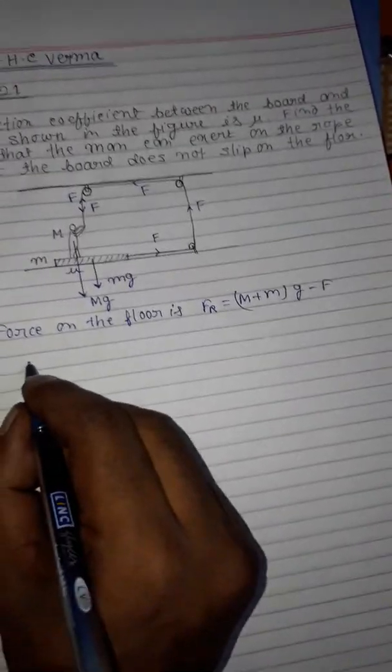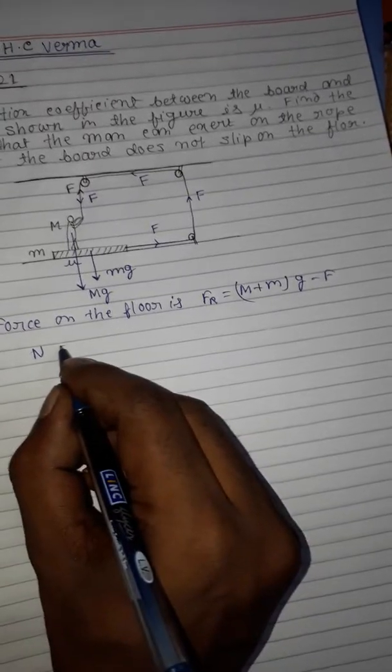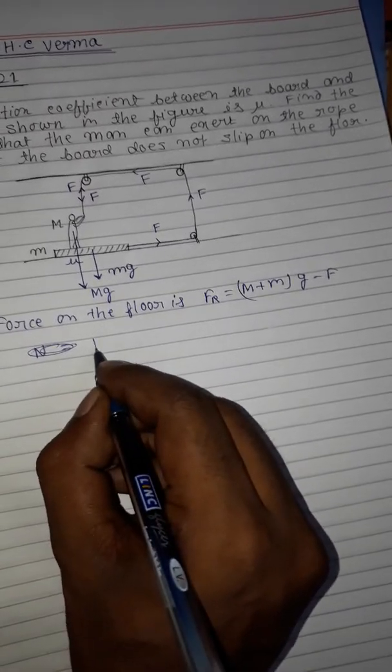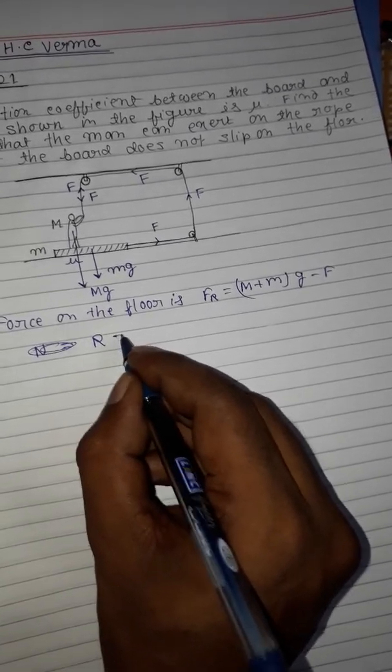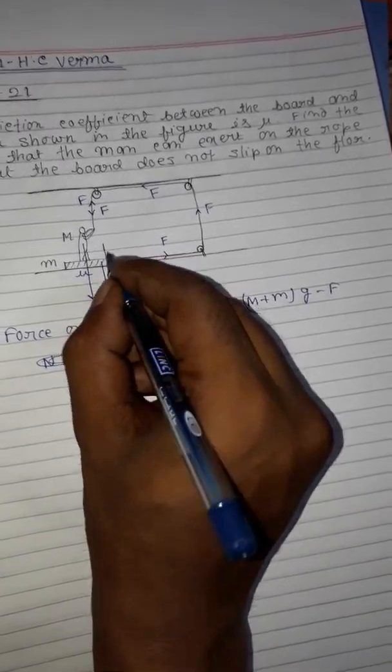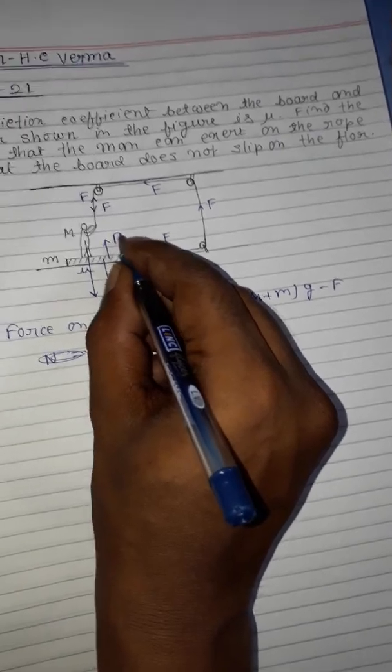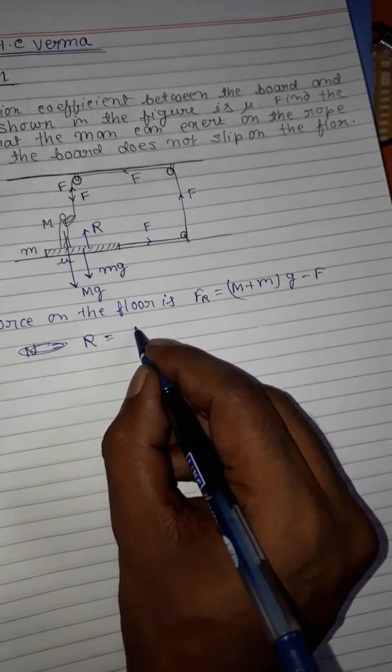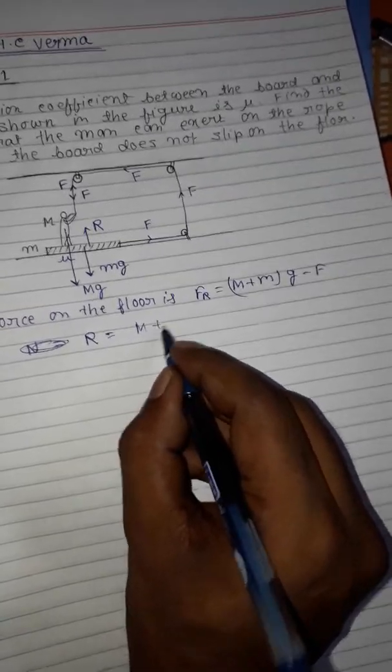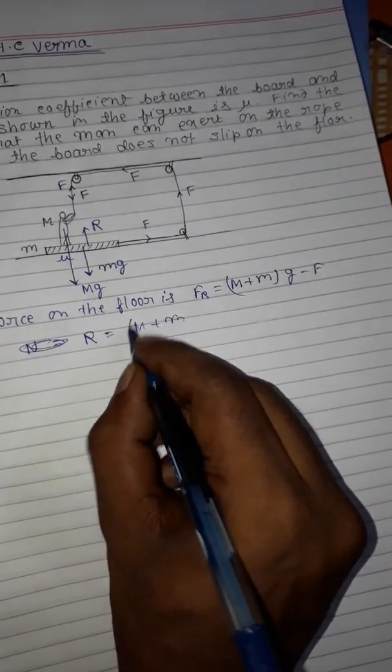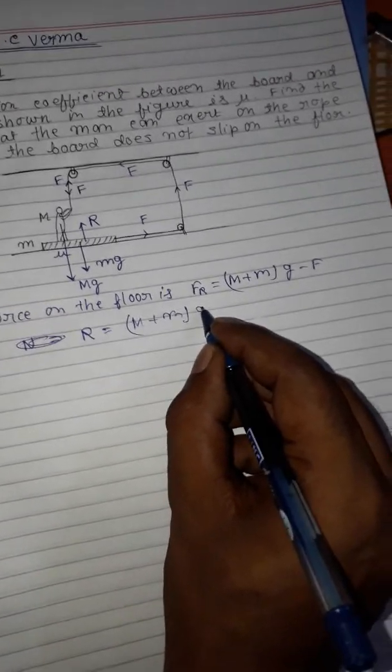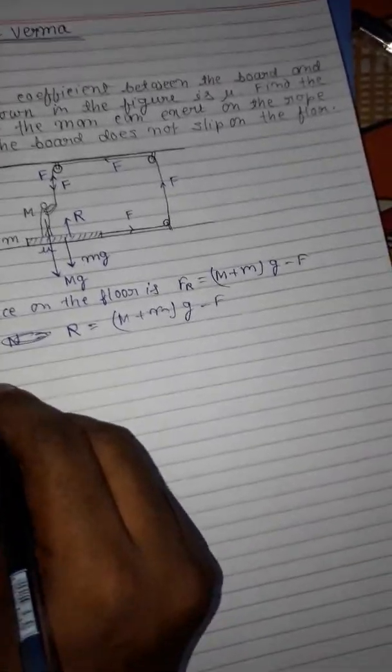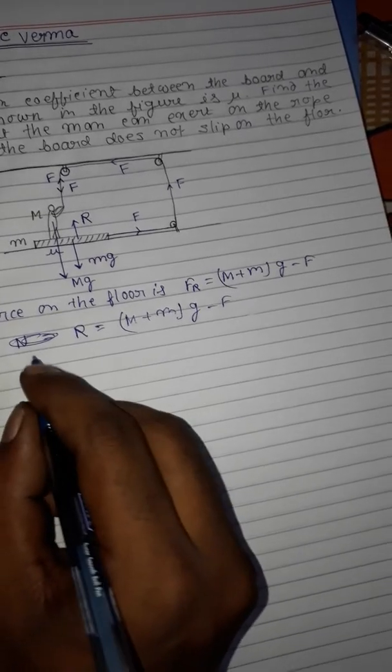So the normal reaction, which we'll call R, equals (M + m)g minus F according to Newton's laws of motion.